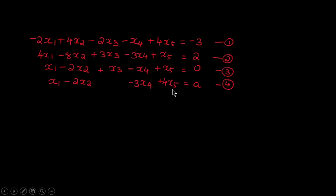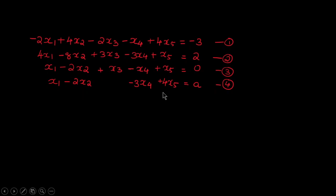Consider these four equations. When you check the equations, we can see that there are five unknowns. From this itself, we can understand that there can be many solutions, because if we have five variables, we should have at least five equations to get a unique solution. But here we have only four equations and five unknown variables.